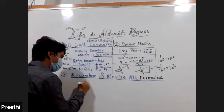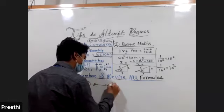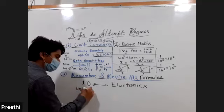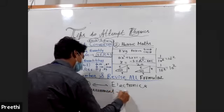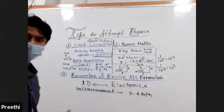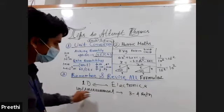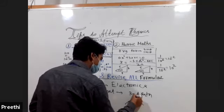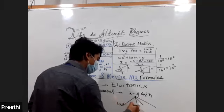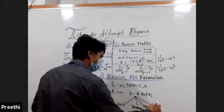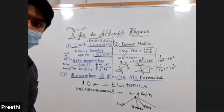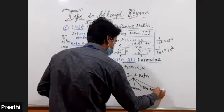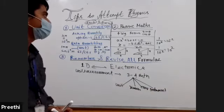So here you must remember from the first chapter 1D to last chapter electronics. Electronics whatever formula is there, most remember the element also unit and measurement. And here specifically you can get either from unit or from dimension or you can get from instrument. Or instrument.